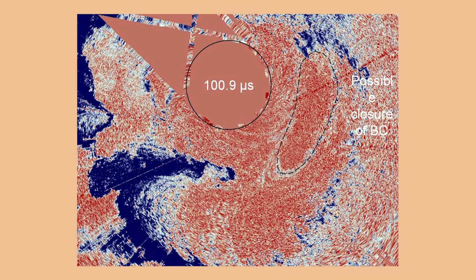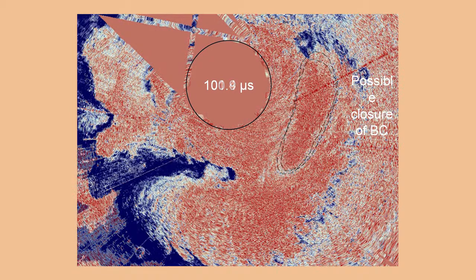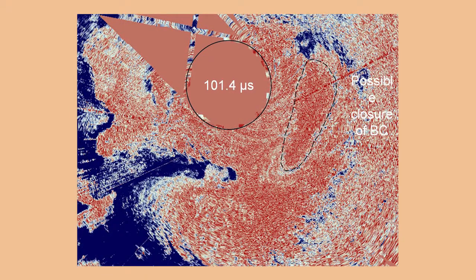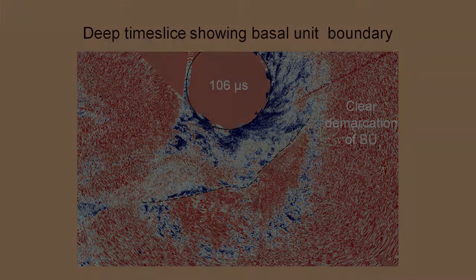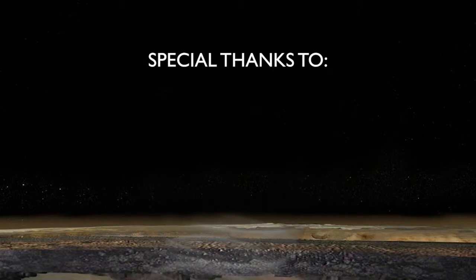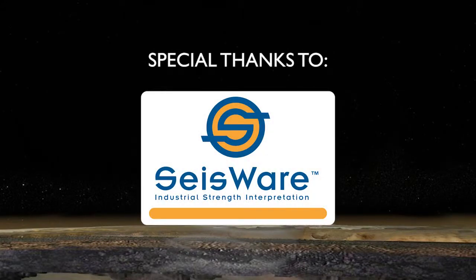Scrolling down a bit further — I mentioned the basal unit and the fact that we weren't sure exactly where it was in the subsurface. At this level down near the base, we can see the edge of that basal unit right in here very well. We can map that out in great detail in this 3D volume, much easier and more accurately than we were able to do with just the 2D collection of observations.